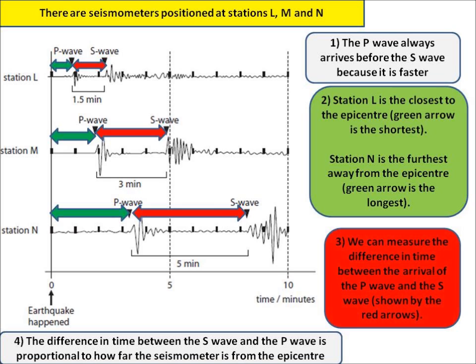What do we see? Well, we see that the P wave always arrives before the S wave, and that's simply because P waves are faster than S waves.